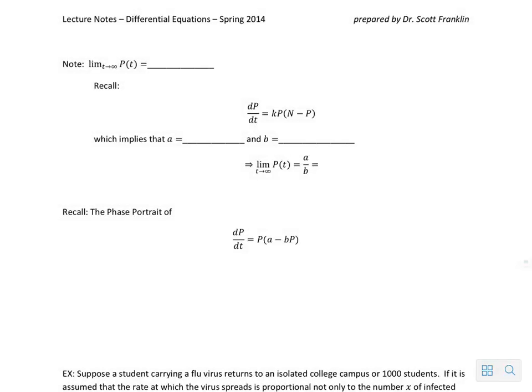Now one thing I'd like us to explore is what is the behavior of the function p of t, that is our population over time, in the long term? What happens as t goes to infinity?